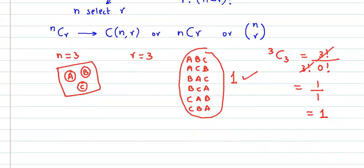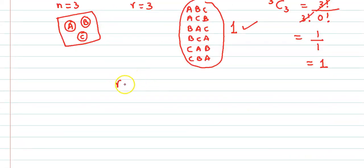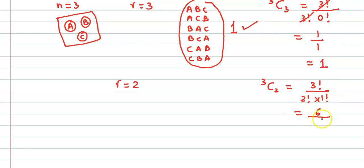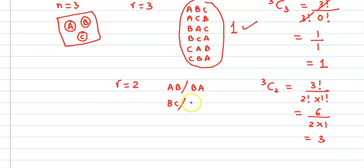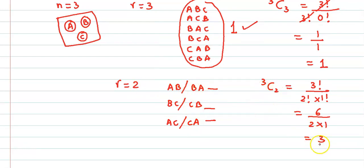Now suppose from these three objects I have to select two. Applying the formula: 3C2 = 3! / (2! × (3-2)!) = 6 / (2 × 1) = 3. Let us verify: selecting a and b, or b and a — it is one and the same. Selecting b and c, or c and b — also one and the same. Selecting a and c, or c and a — one and the same. So there are three possible selections: {a,b}, {b,c}, {a,c}. Order doesn't make any difference, so 3C2 = 3.